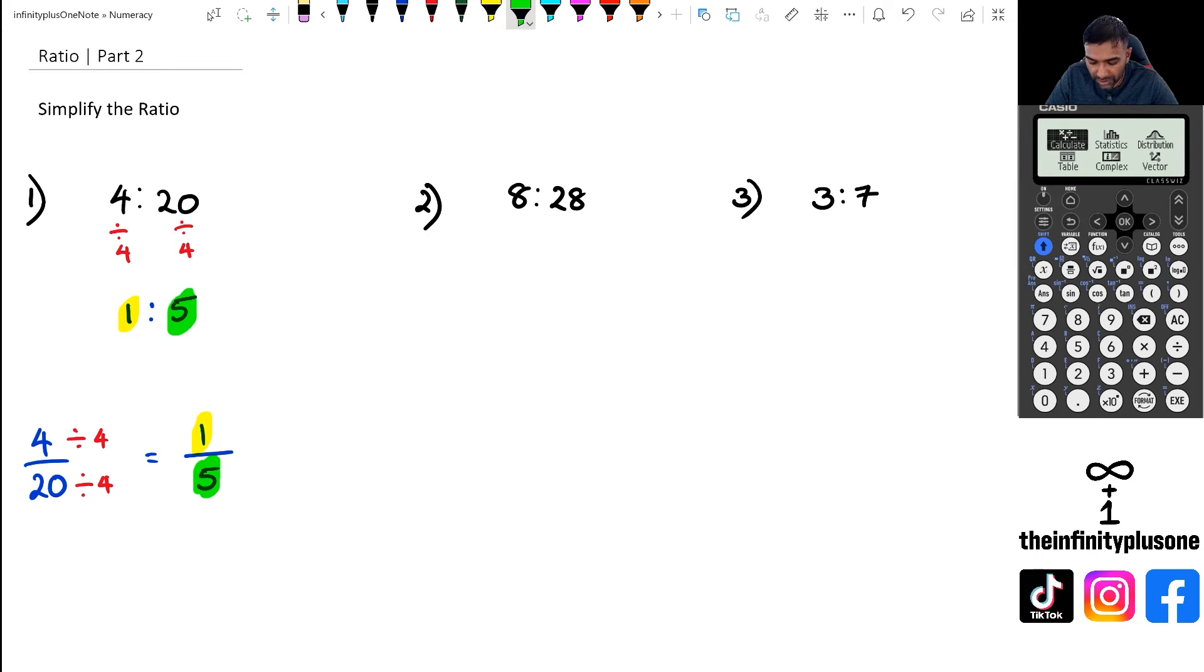So let's have a look at 8 and 28. Now when we look at 8 is to 28, our first instinct is well actually 28 is not actually divisible by 8, but it is divisible by 2, both these numbers. So I'm going to divide both sides by 2. And when I do this, 8 divided by 2 is 4, 28 divided by 2 is 14.